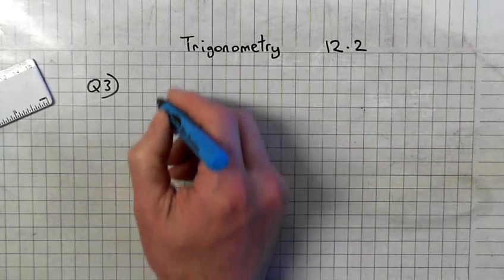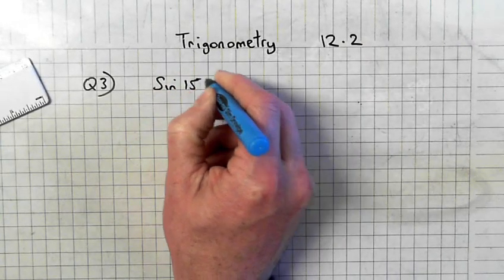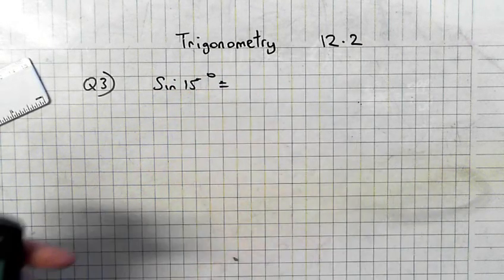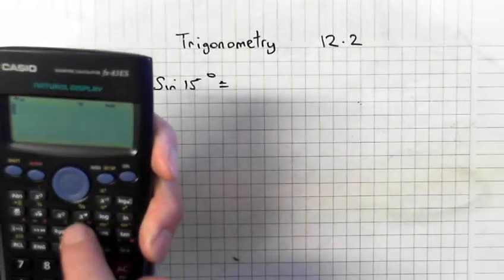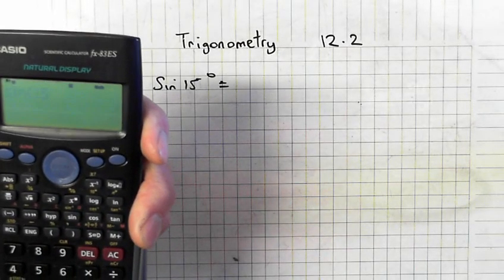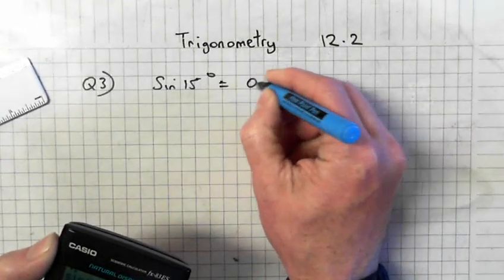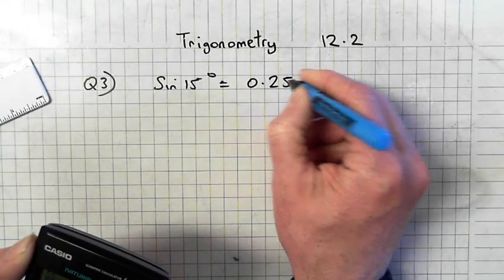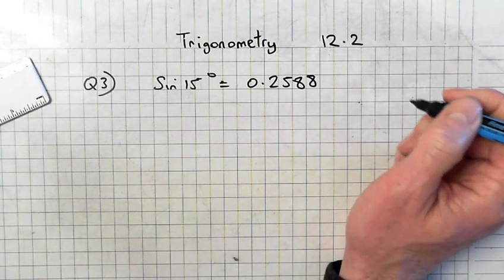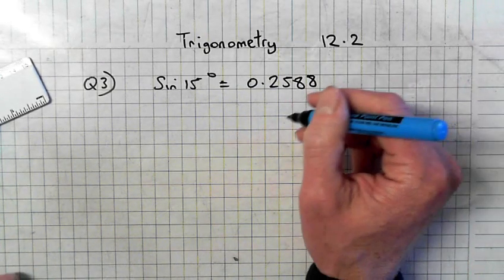So example 1: sin 15°. They're easy. You just put them in the calculator. So sin 15 degrees equals, press SD. 0.25a there. That's all you have to do in question 3s.